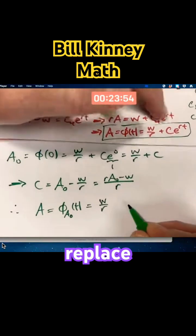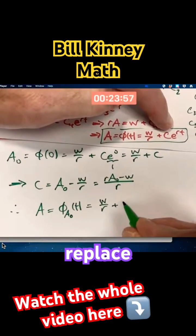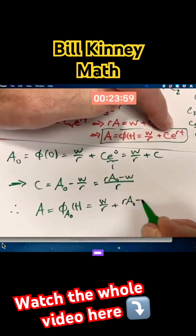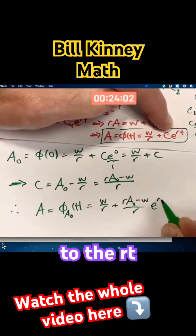Look here, replace c with this fraction. Replace c with r times a-naught minus w over r e to the rt.